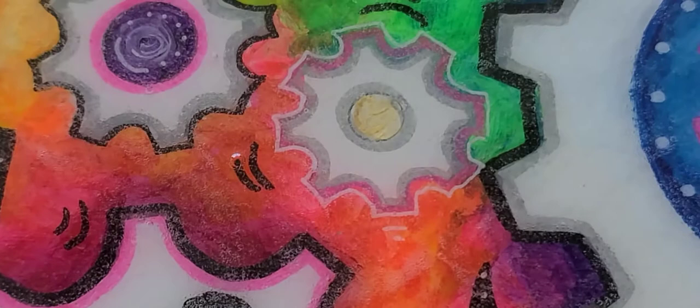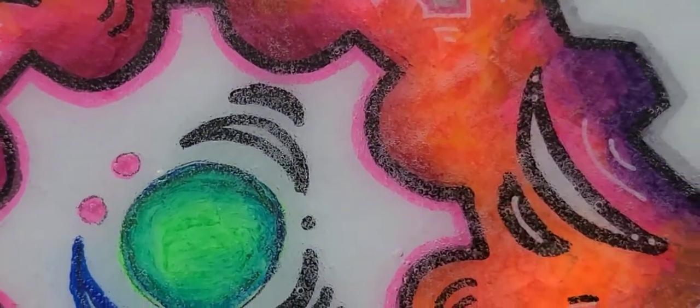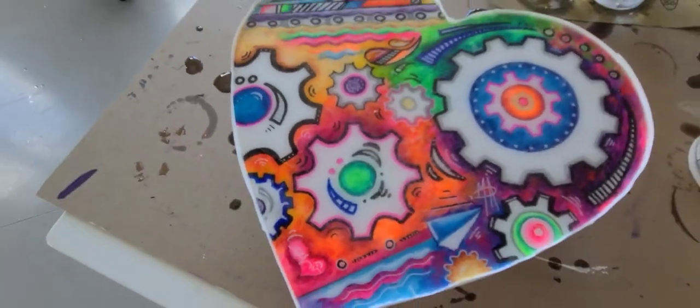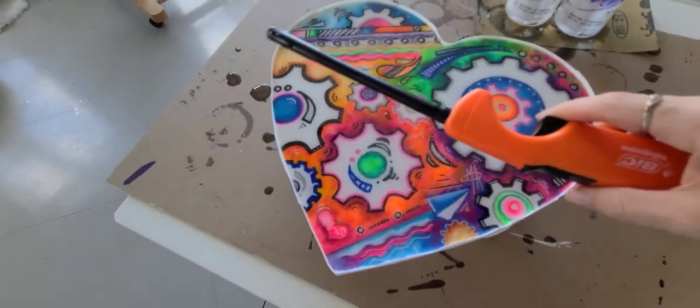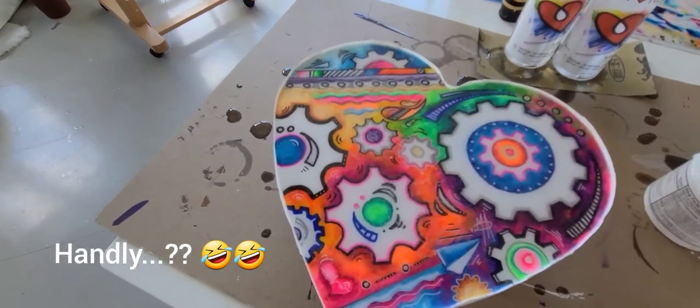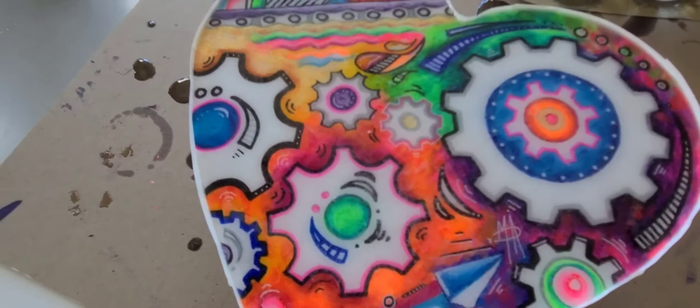You can use a butane torch, or right now all I have handy is a barbecue lighter, which works fine in a pinch. So let's zoom back in here and show you how these bubbles disappear with a little bit of heat.